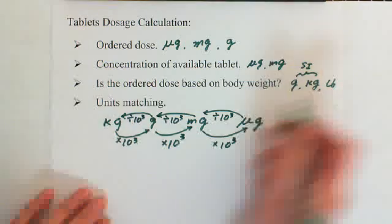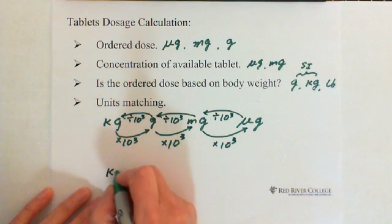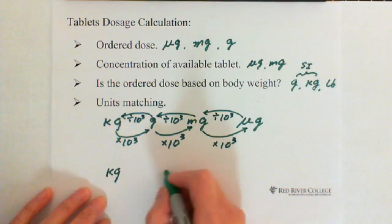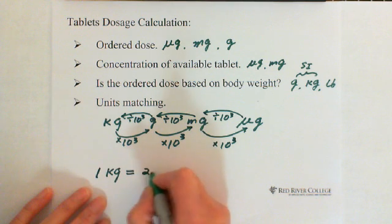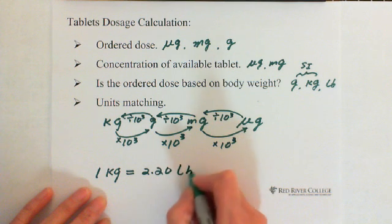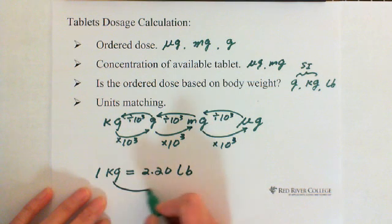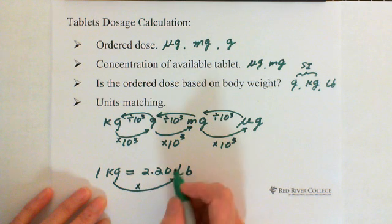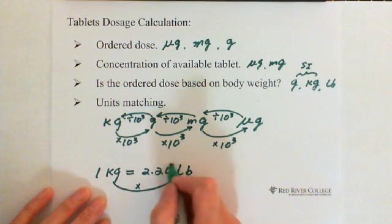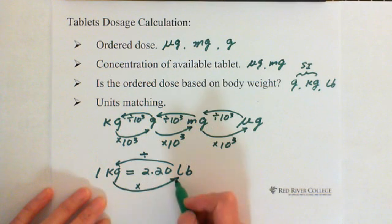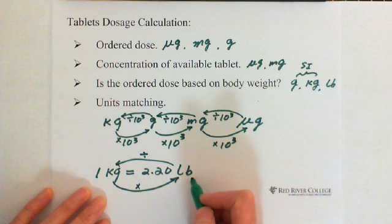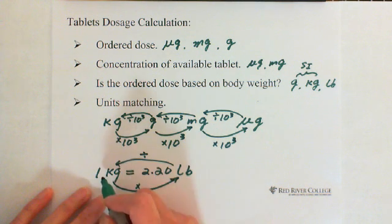Talking about body weight, mostly you'll deal with kilograms to pounds. One kilogram equals 2.20 pounds. So from kilograms to pounds, you multiply by 2.2; from pounds to kilograms, you divide by 2.2.